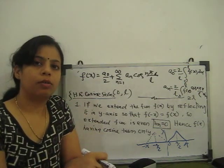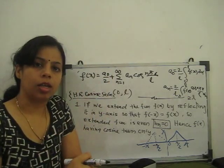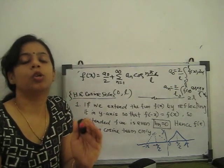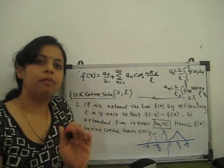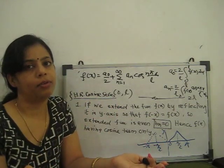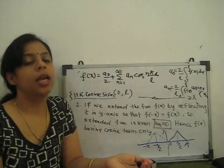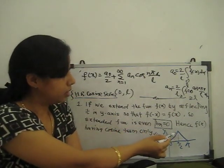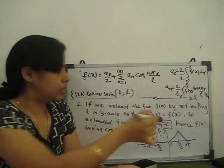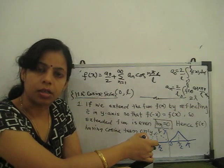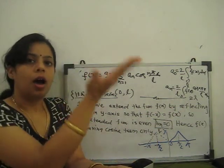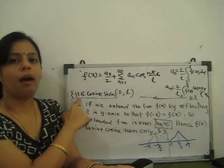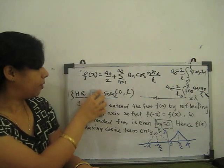For half-range cosine series we only find the cosine series — whether bₙ is zero or not, we don't check. If they specify half-range sine series, then we go for the sine series. When asked for half-range, they specify either sine or cosine. Reflecting about the y-axis always gives an even function; reflecting about the origin or x-axis gives the sine part.